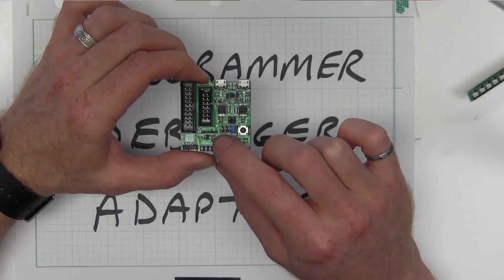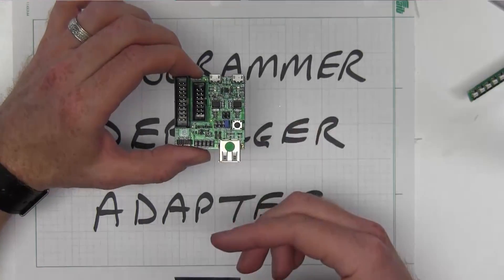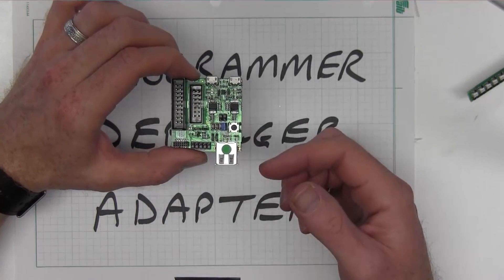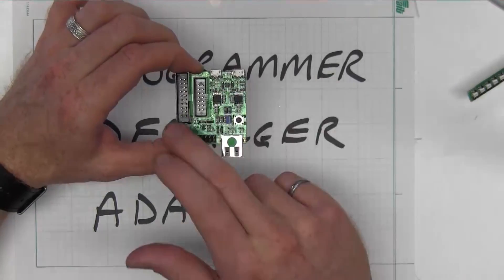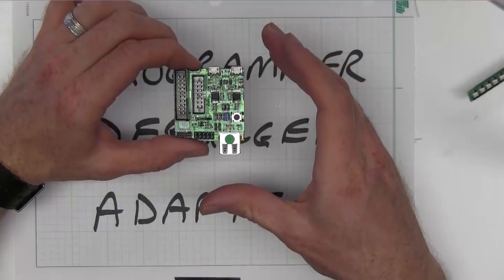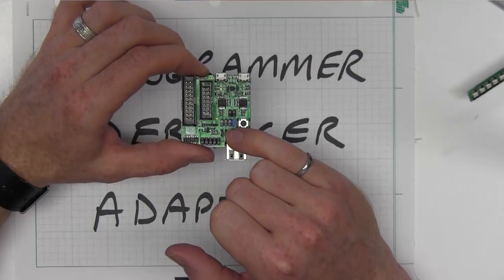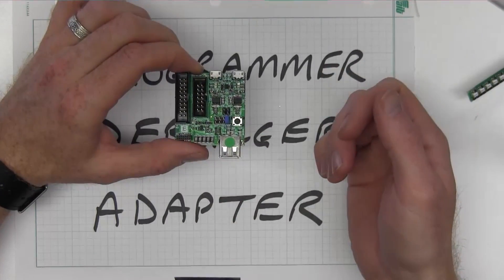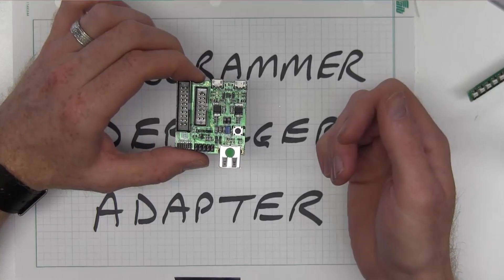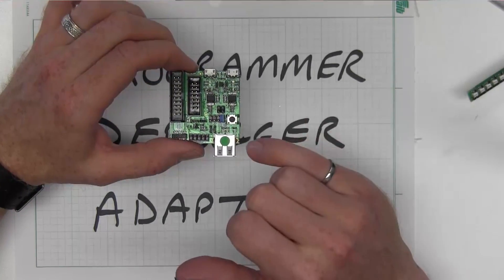You've also got other jumpers here. So these two here are for power selection. So if you want to power your target board, which sometimes you do, sometimes you don't, you can select 5 volt, which comes from either the USB or the J-Link. So whatever happens to be plugged in. You've got that available. And then there's a regulator on here. So you've got 3.3 volts available as well. So you can select that. And of course, those are the two most common target voltages that you're going to come across. So having those options are really excellent.